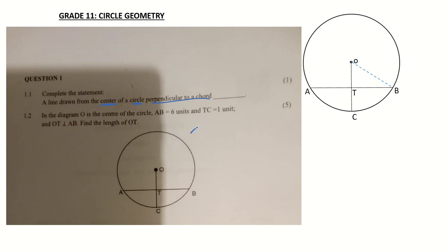I redrew the sketch here for clarity because the paper is a bit blurry. Our line from the center is OC intersecting AB at T. So AB is our chord and OC is our line drawn from the center starting at O. The answer is: it bisects the chord.